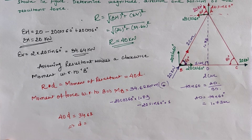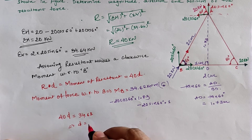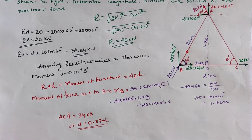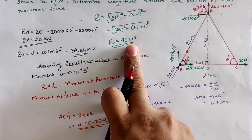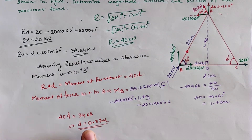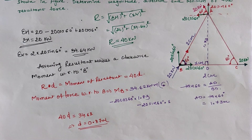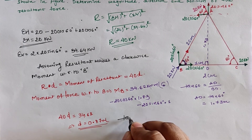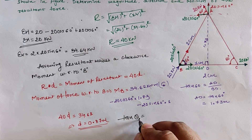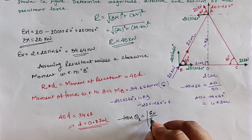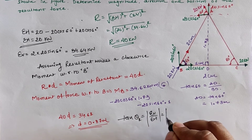Equating the moment at B with the resultant moment: 40 × d must equal 34.62. Solving, the perpendicular distance d is 0.87 meters. This means the resultant 40 kN load has a perpendicular distance of 0.87 meters with respect to B. Now we must find the direction of this resultant force, and for that we take the arctangent of the angle, which is Sigma V divided by Sigma H.